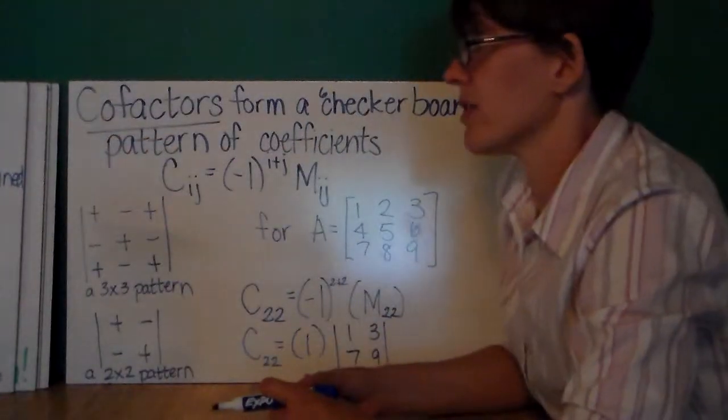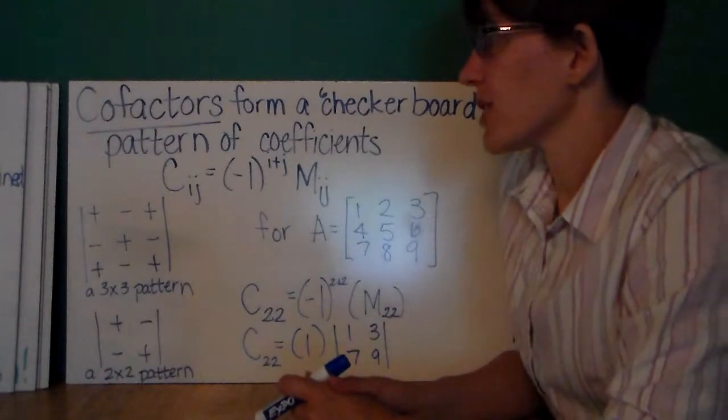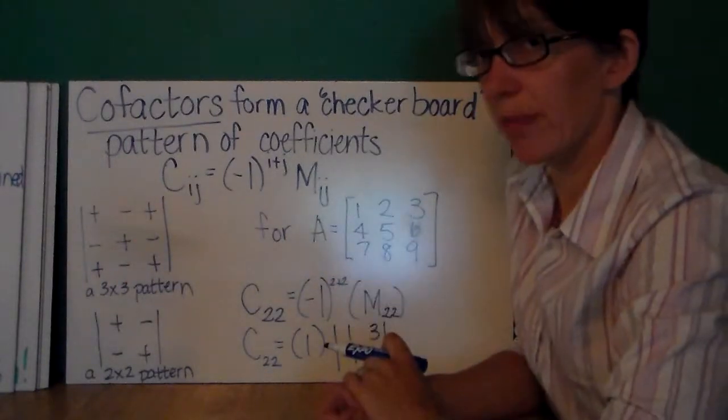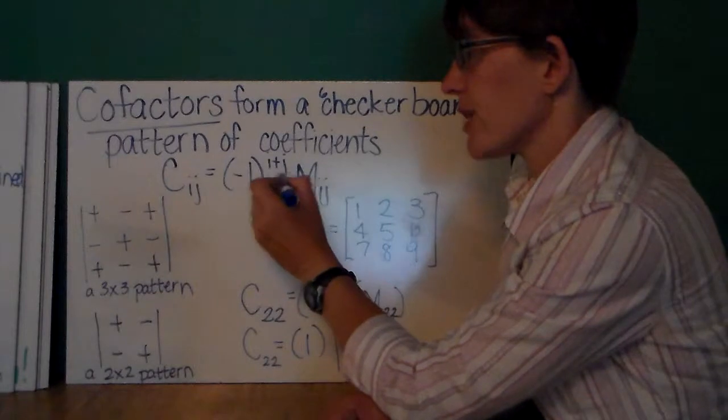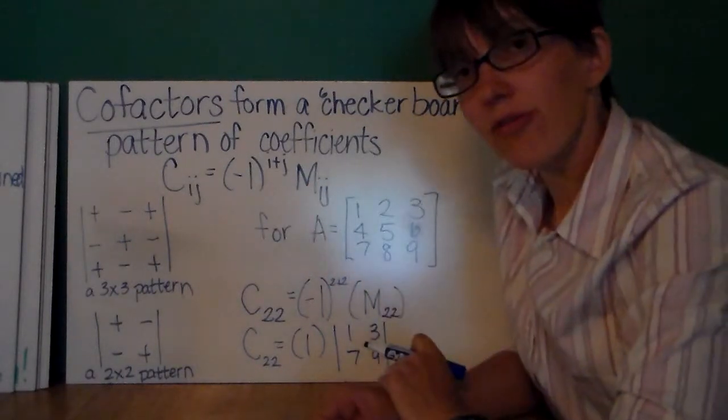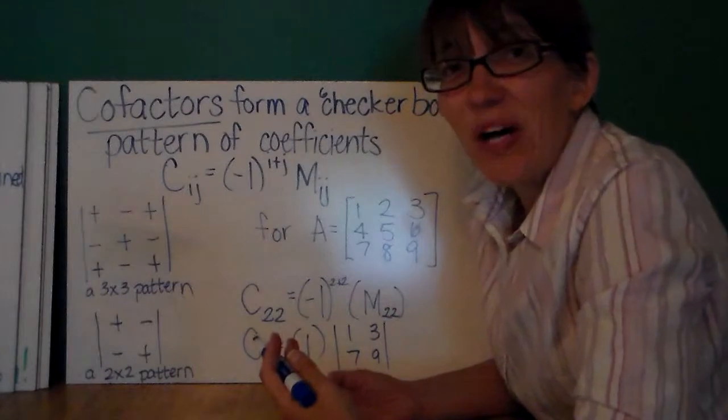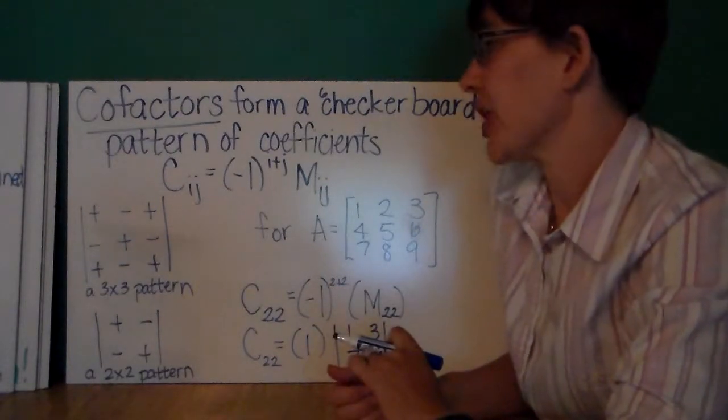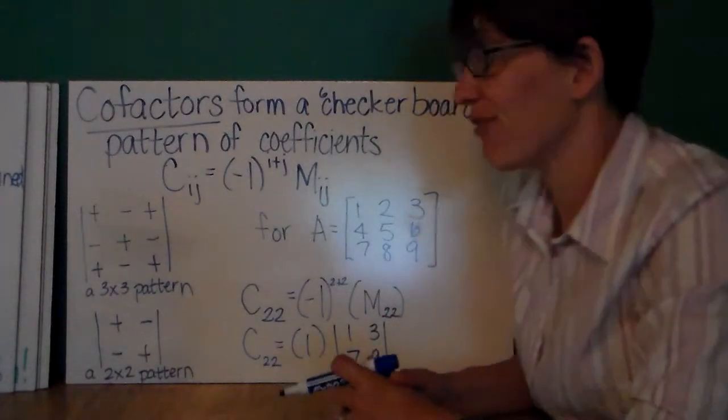So, cofactors are the signs, basically. They form a checkerboard pattern of coefficients. And to find a cofactor, we're going to multiply this checkerboard pattern sign by the minor of the matrix. So, the cofactor for a given row and column is equal to negative 1 raised to the power of the row number plus the column number times the minor for that row and column. Now, honestly, I don't memorize this formula. I just memorize the cofactor checkerboard pattern, which is you start up here at 1, 1 with a plus sign, and you go from there. So, we have a 3 by 3 pattern. There's a 2 by 2 pattern. I bet you can extend to a 4 by 4 or a 5 by 5 pattern.